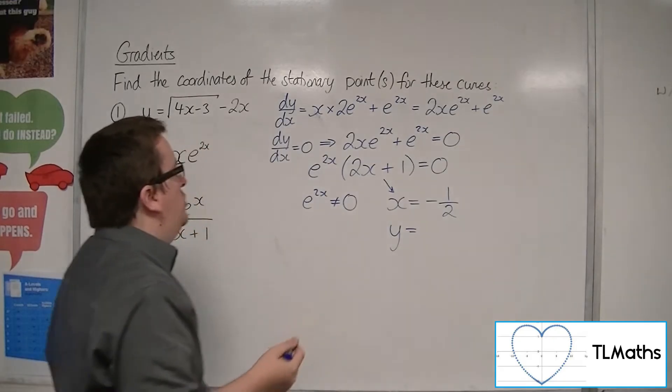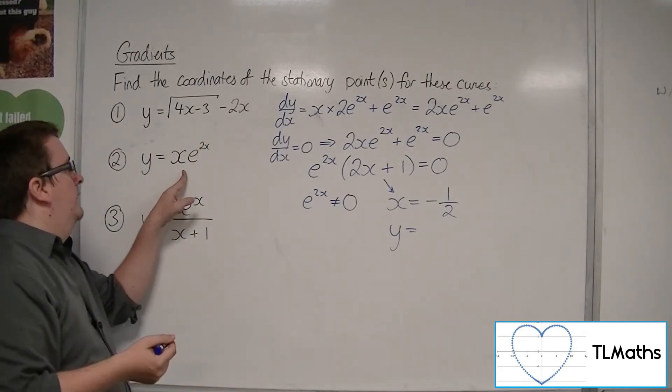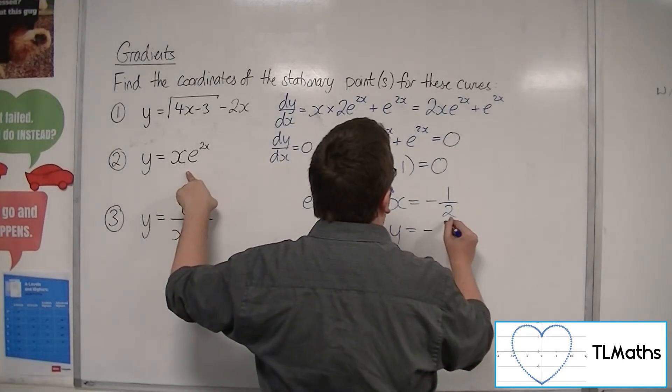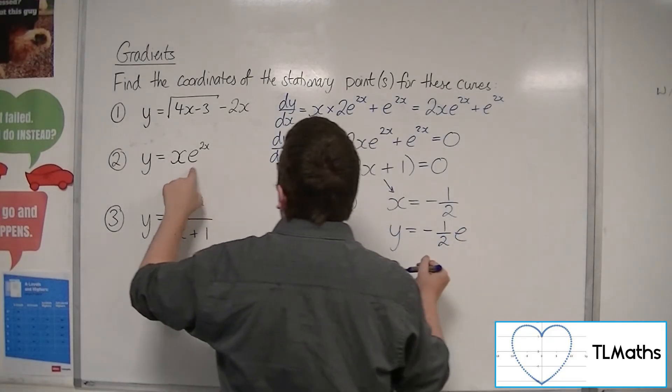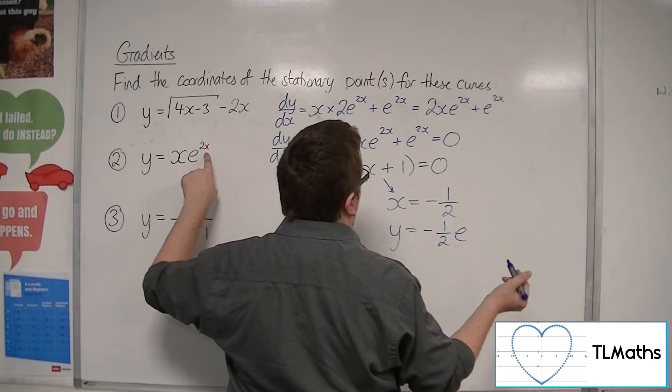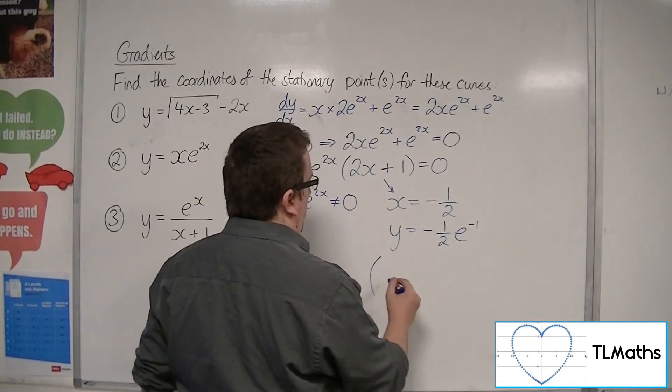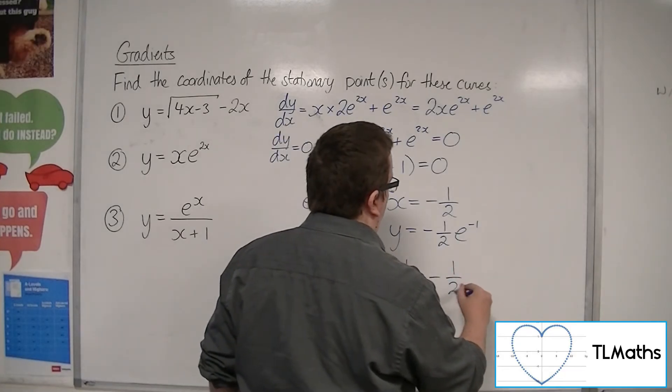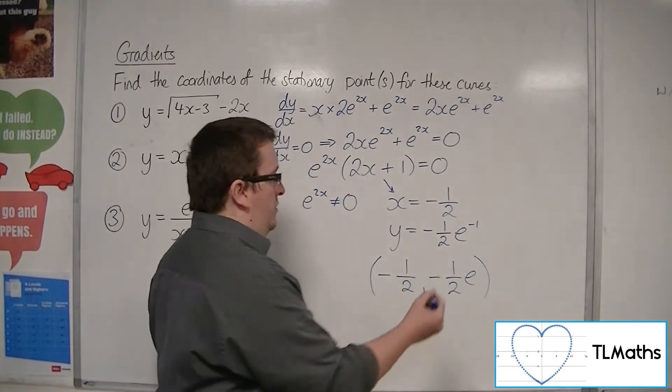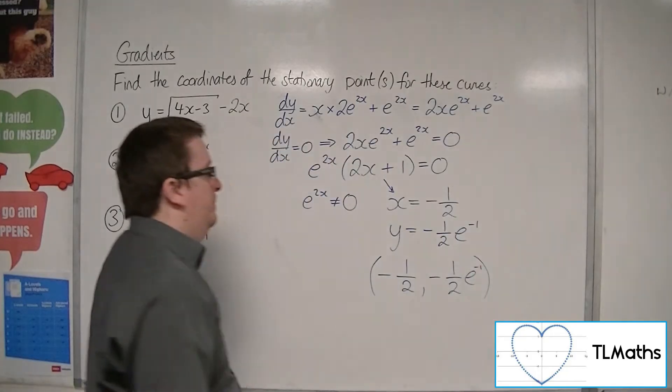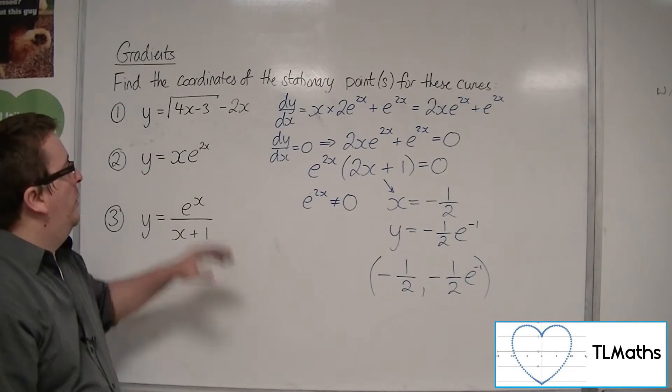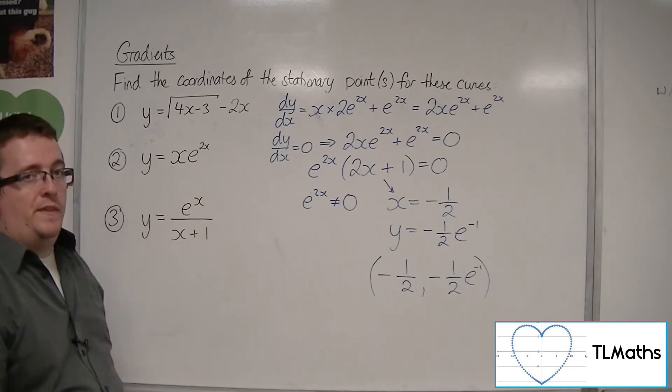So if I substitute that into here, I can get the y value. So y = (-1/2)e^(2(-1/2)), so e^(-1). And so the coordinates of the stationary point are (-1/2, -e^(-1)/2). That's the coordinates of the singular stationary point for that curve.